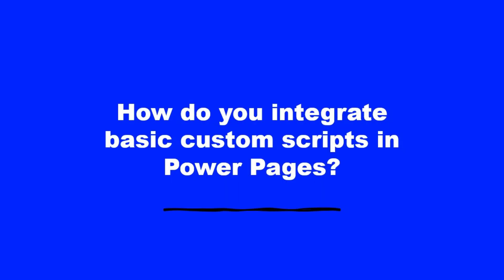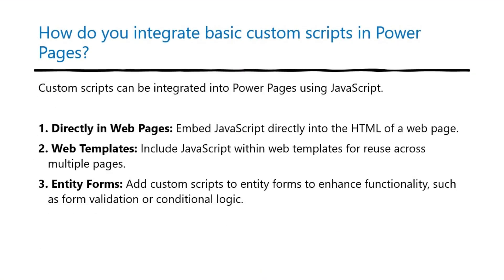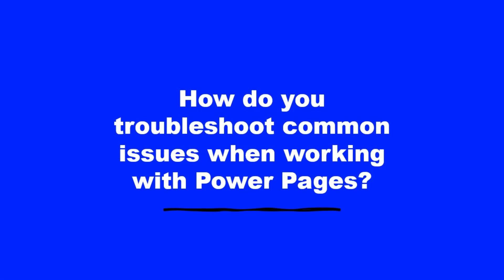How do you integrate custom scripts in Power Pages? Custom scripts can be integrated into Power Pages using JavaScript. One, directly in web pages — embed JavaScript directly into the HTML of a web page. Two, web templates — include JavaScript within web templates for reuse across multiple pages. Three, entity forms — add custom scripts to entity forms to enhance functionality, such as form validation or conditional logic.